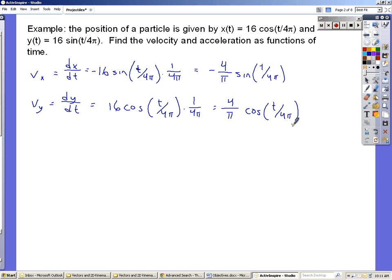Now the way we would write this as a vector is v equals negative 4 over π sine t over 4π i hat, plus 4 over π cosine t over 4π j hat. And the units is meters per second.